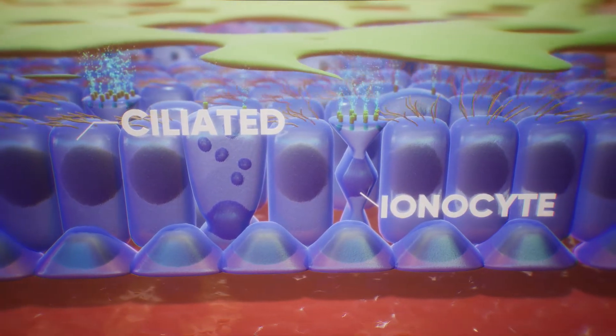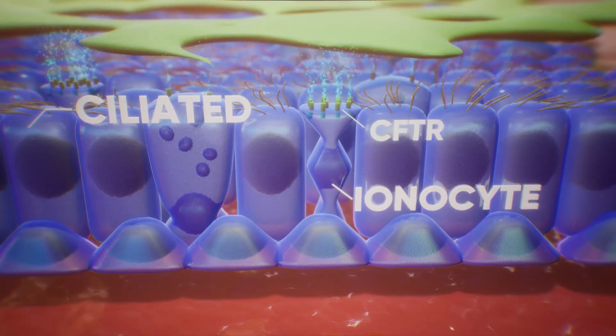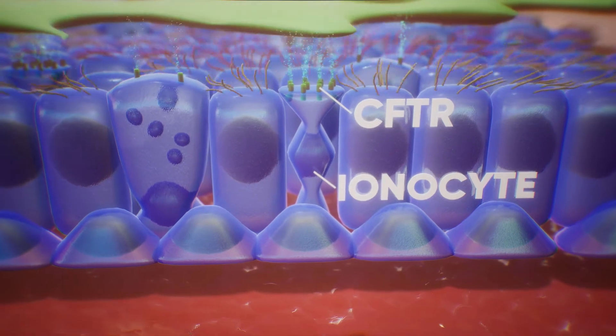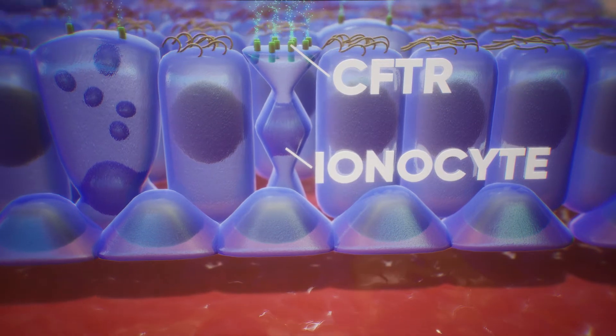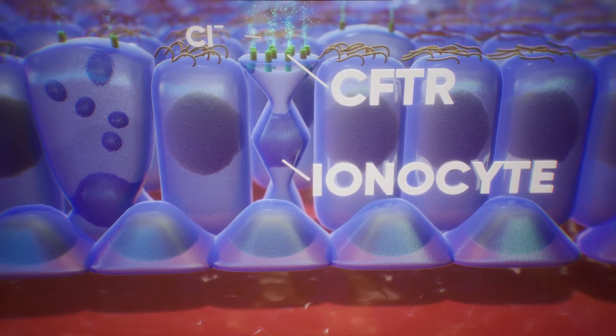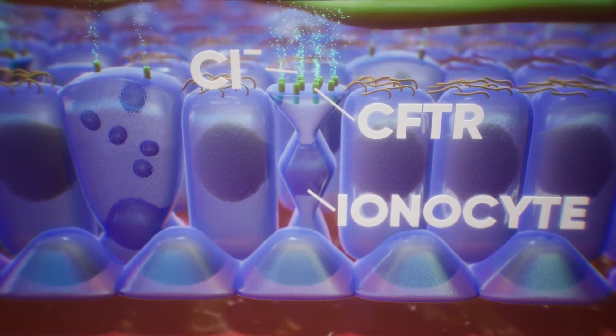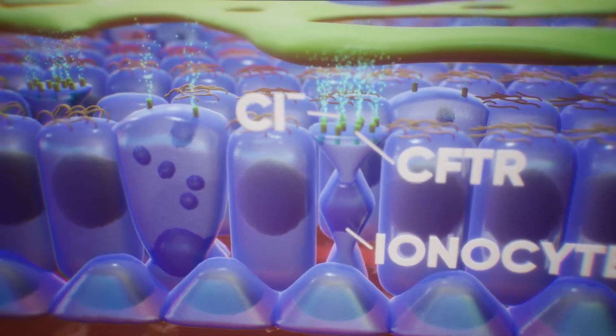Ionocytes are thought to express high levels of CFTR protein. The instructions to make CFTR protein are encoded in the DNA of each cell. The CFTR protein helps control the movement of salt and fluids into and out of the cell to keep mucus at a healthy level.